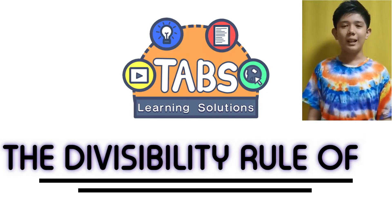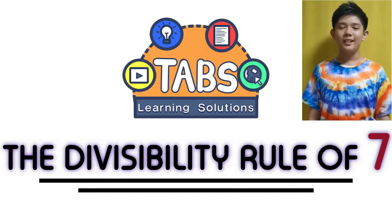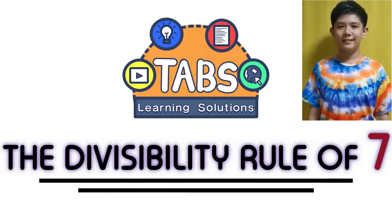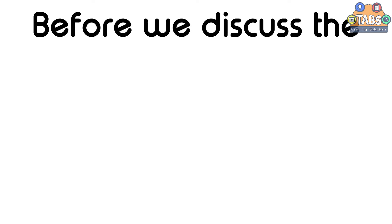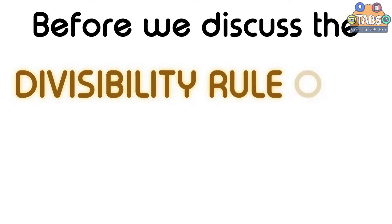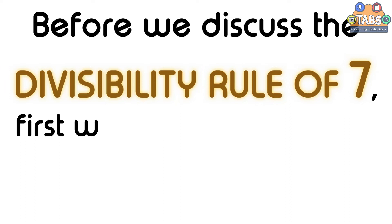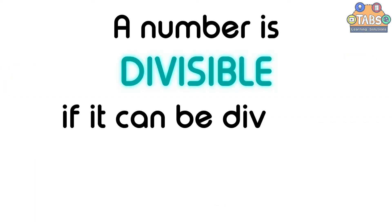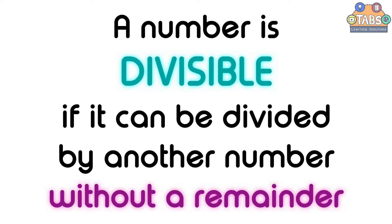Hello guys! Our topic for today is the Divisibility Rule of 7. Before we discuss the Divisibility Rule of 7, we should know what divisible means. A number is divisible if it can be divided by another number without a remainder.